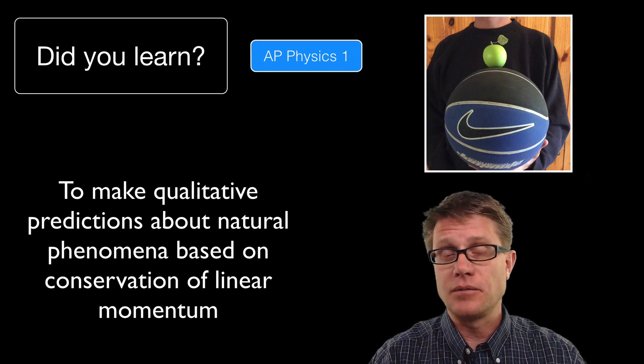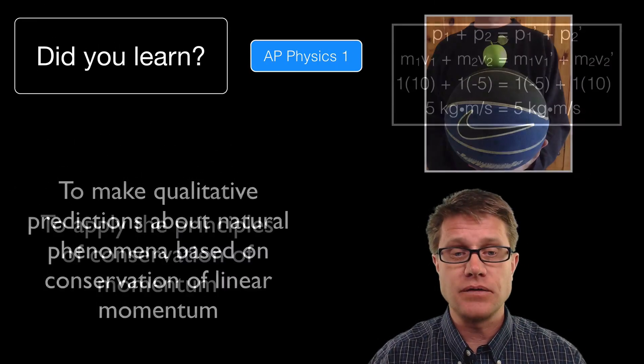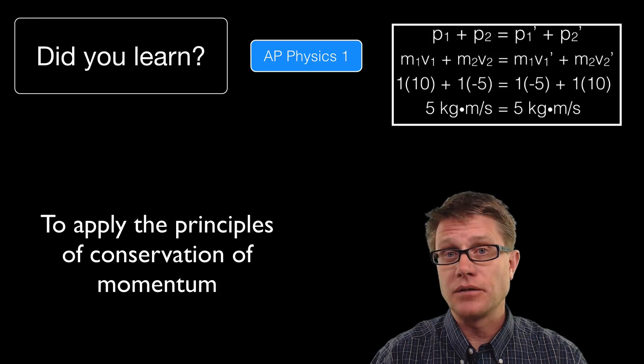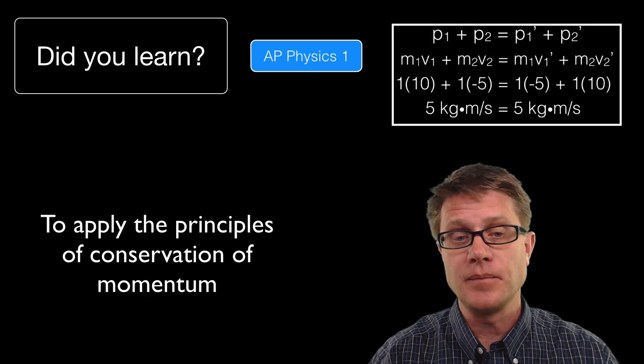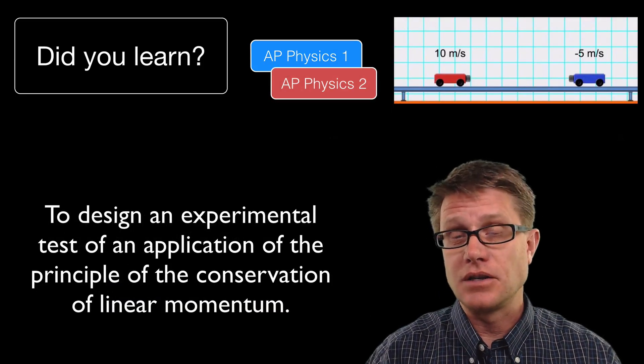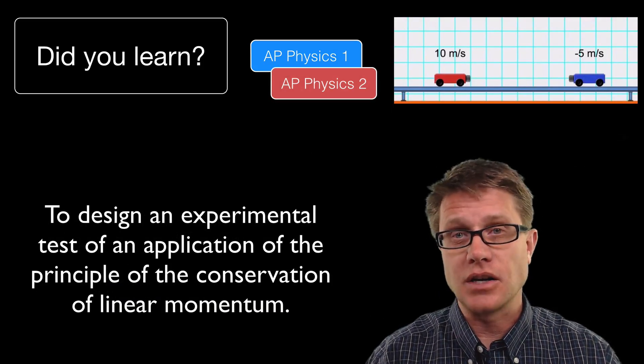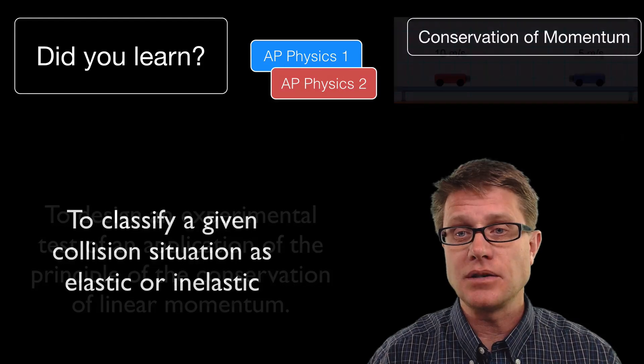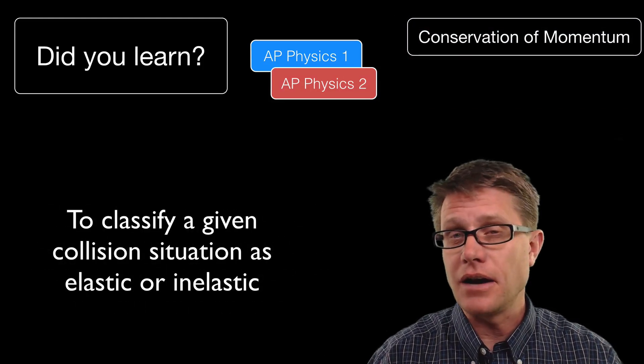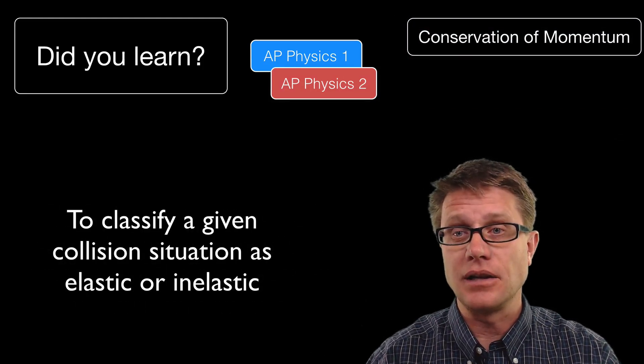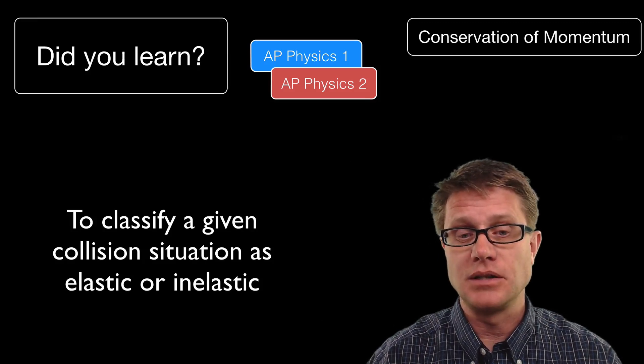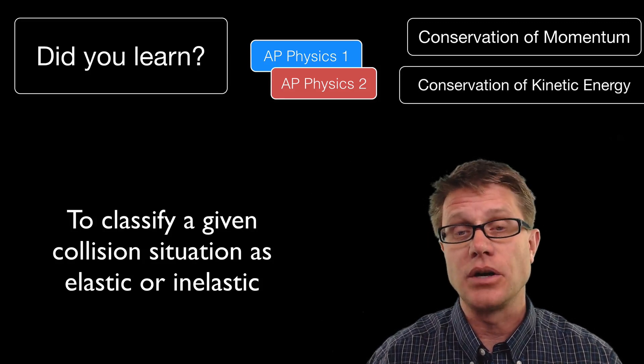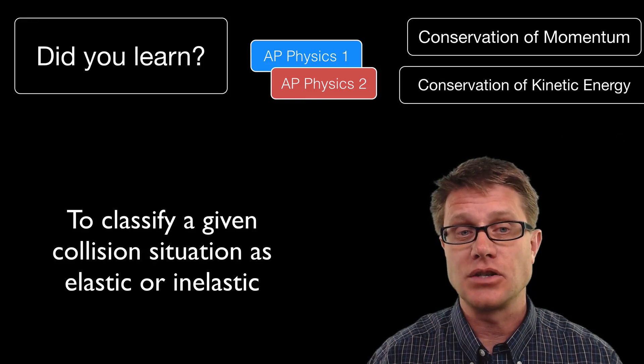So did you learn to make qualitative predictions about momentum and how it is transferred? Could you apply the principle of conservation of momentum? Remember P1 plus P2 equals P1 prime plus P2 prime. Did you then figure out how to design an experiment? So using carts and colliding them is the best way to do this. And then finally did you figure out how do you classify this as elastic or inelastic? Remember in any collision conservation of linear momentum is going to be maintained. But only in an elastic collision are we also going to have the conservation of kinetic energy.